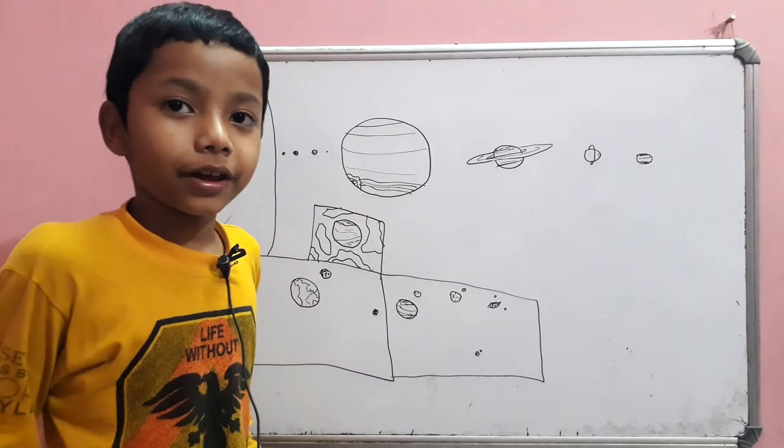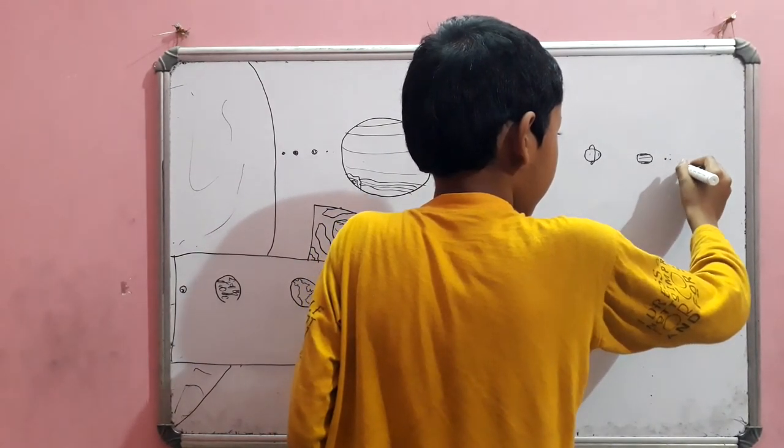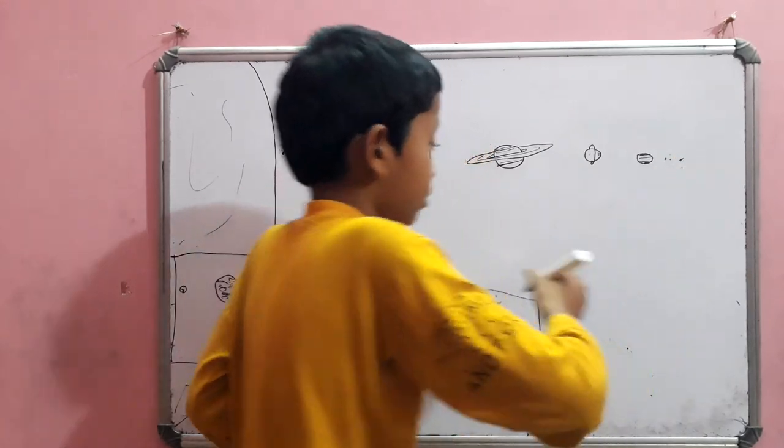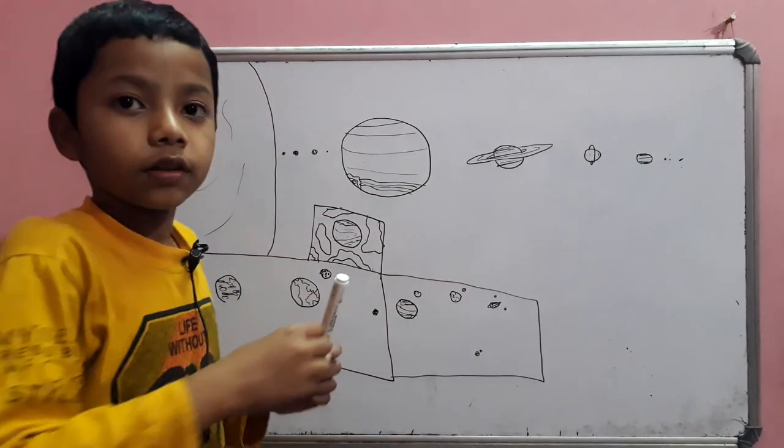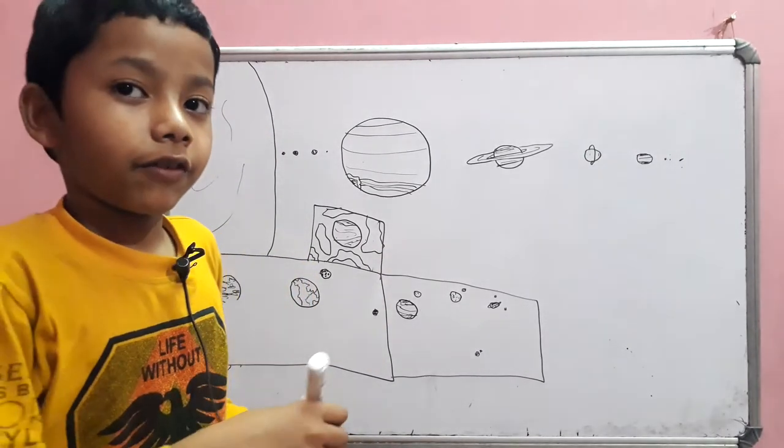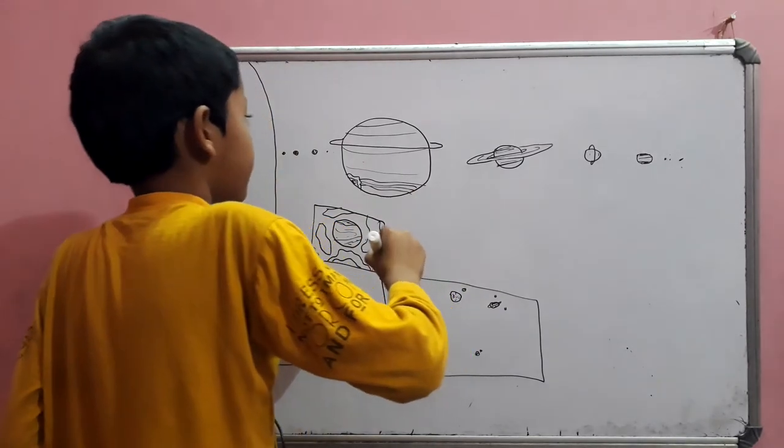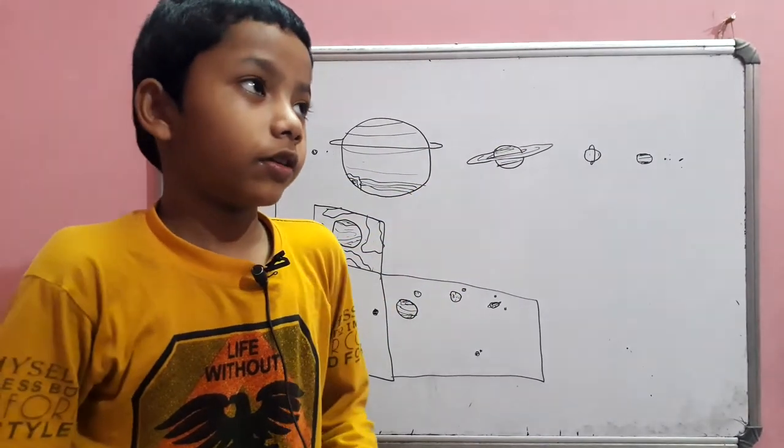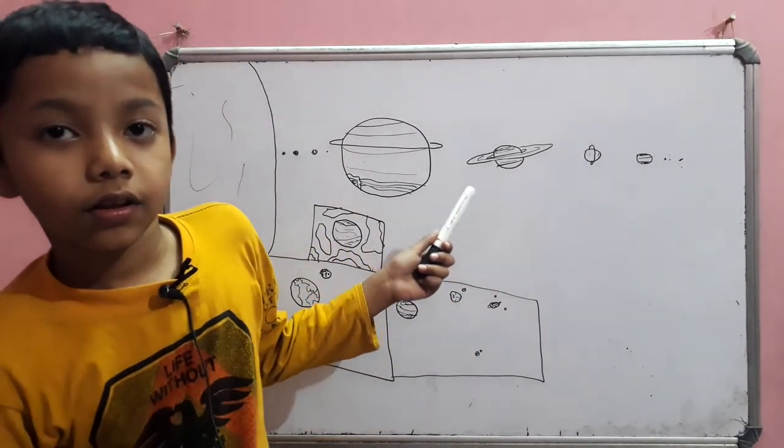Are there any more planets? Nope. So these are the dwarf planets. Now, Jupiter has also rings. Yes, it has a ring. Now I'm going to explain how many moons are there on planets.